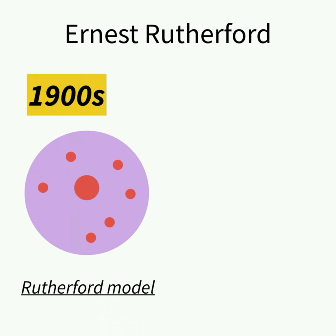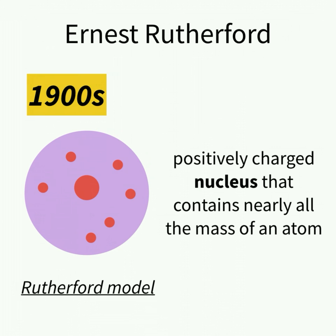Then Ernest Rutherford came up with a Rutherford model. In this model, he postulated that there was a positively charged nucleus, as shown by the large red circle, that contains nearly all the mass of an atom.